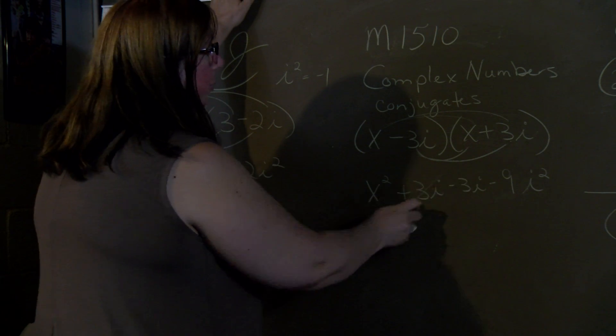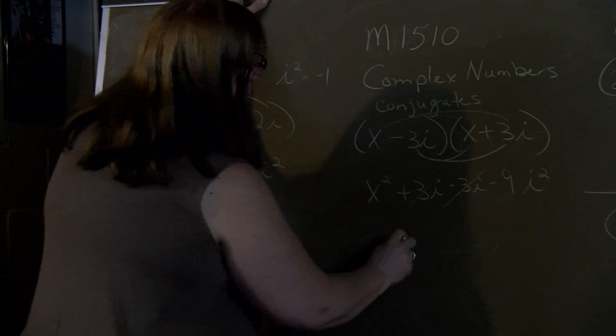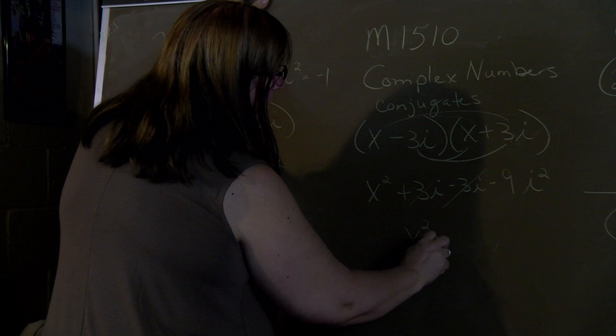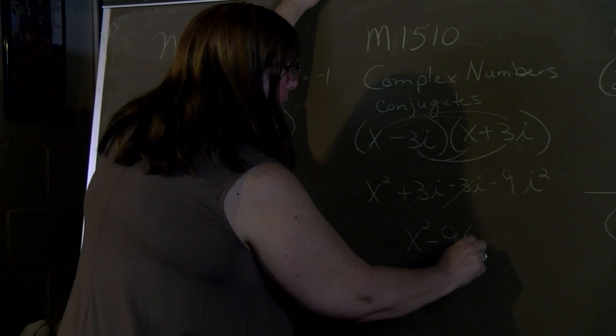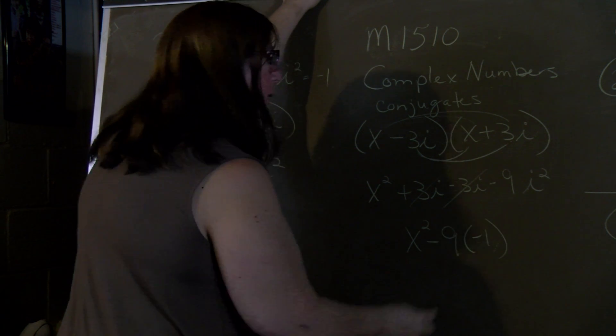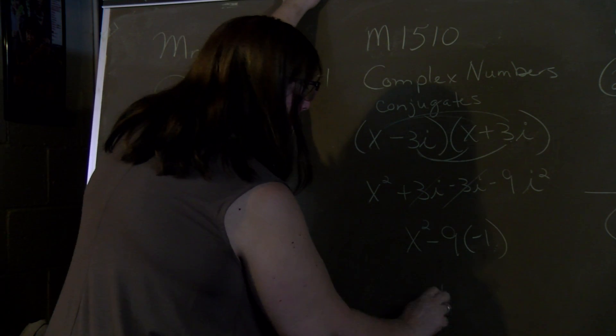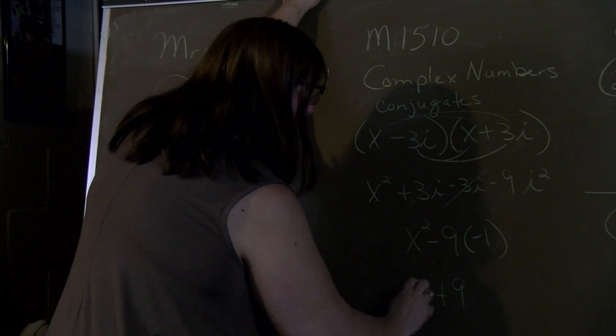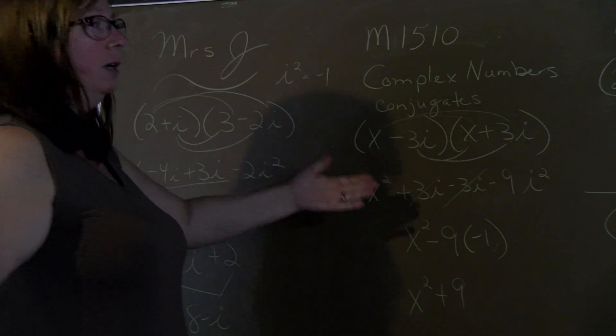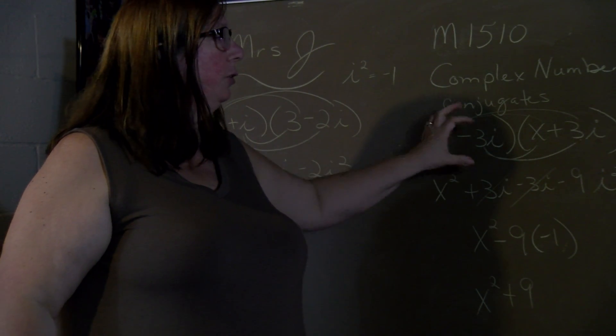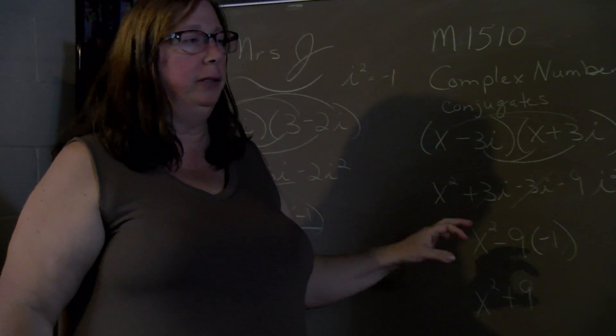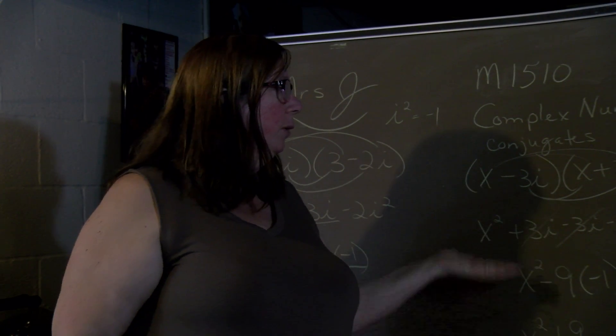Notice our middle terms cancel. We have 9 times i squared is negative 1. Negative and a negative makes it a positive 9. So we got rid of the imaginary part. Any time you have something you want to try and get rid of the imaginary part, you multiply by its conjugate.